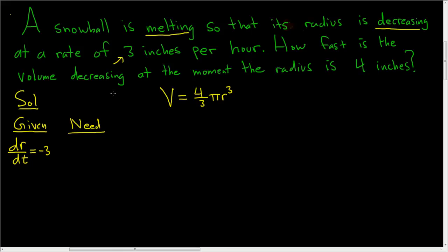We want to know how fast the volume is decreasing, so we need the rate of change of the volume with respect to time, at the moment the radius is 4 inches. Now we have what we're given and what we need, and we have the formula.